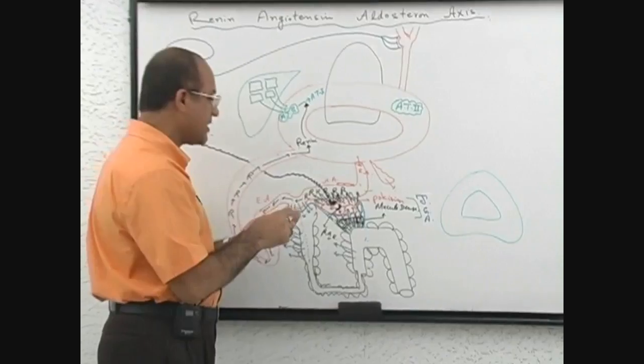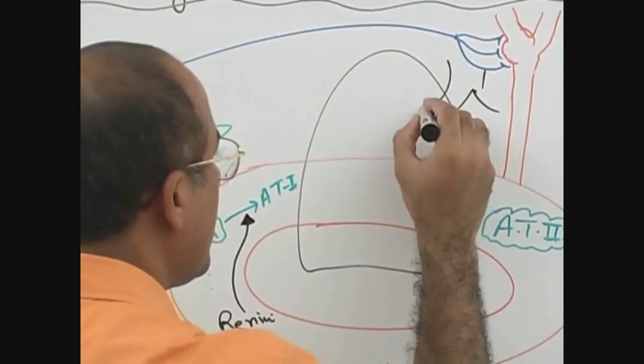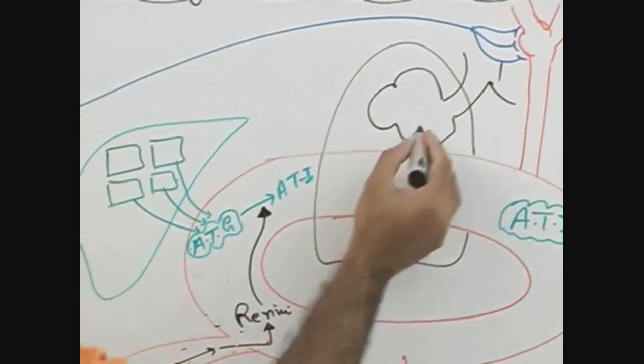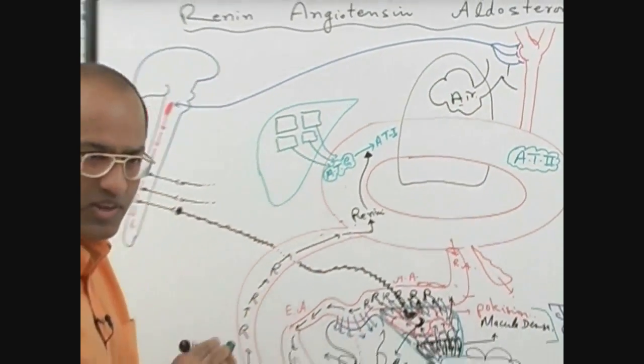Let me explain. Here is the alveoli. This is the airway and these are the alveolar system - air pockets. Blood should not enter there.